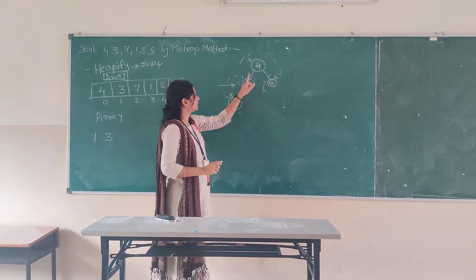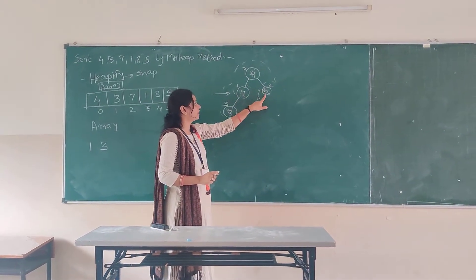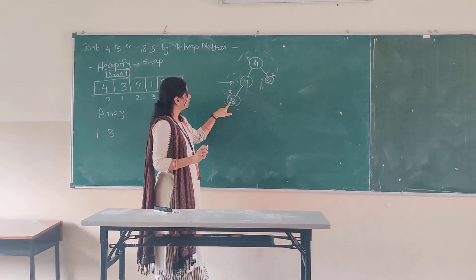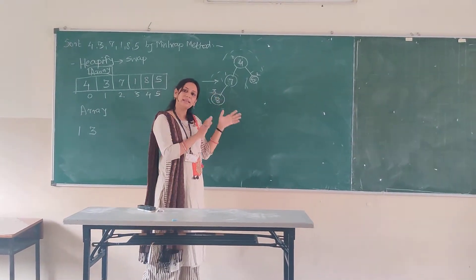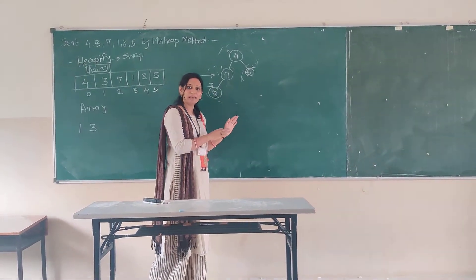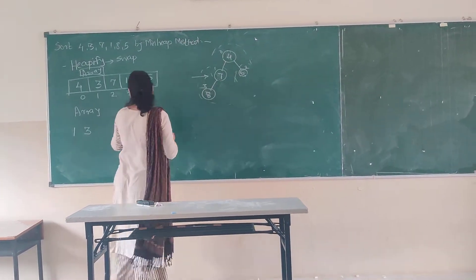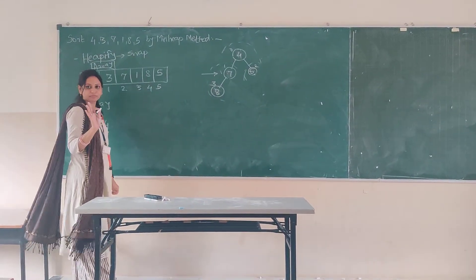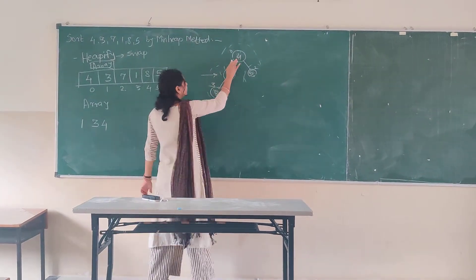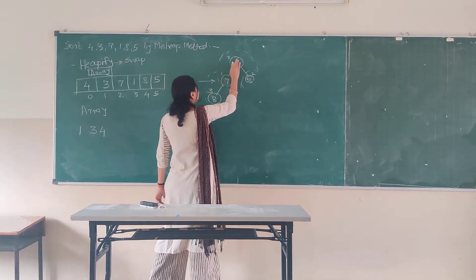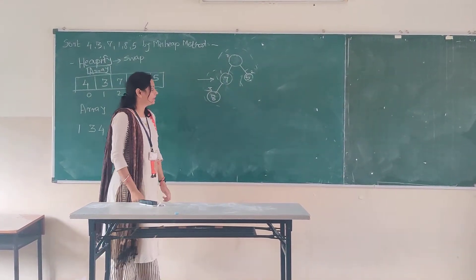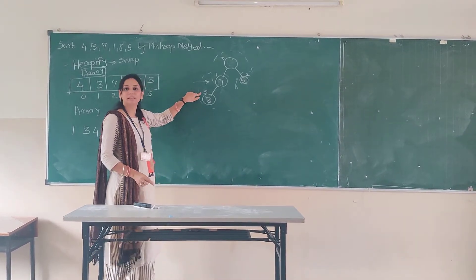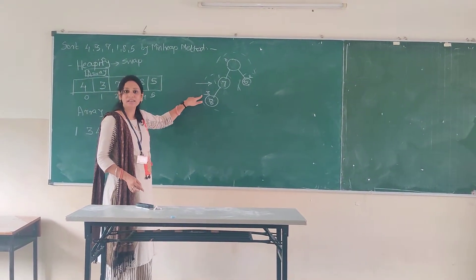Checking again: 4 is less than 7 and 5. Yes. 7 is less than 8. Yes. Now this is the balanced tree. We take the next element, which is 4, into the sorted array. We delete it from the tree and place the element from the last location.